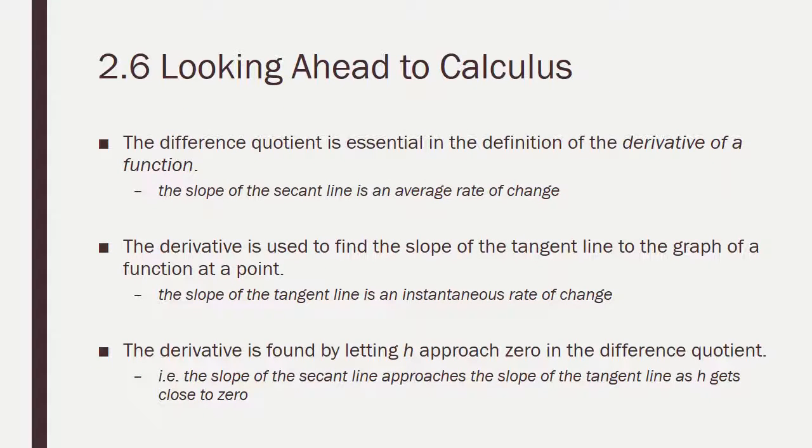The difference quotient is essential in the definition of the derivative of a function, which you will hear a lot about when you take calculus. The slope of the secant line is the average rate of change. We deal a lot with change in calculus. The derivative is used to find the slope of the tangent line to the graph of a function at a point, and the slope of the tangent line gives you an instantaneous rate of change. So the slope of the secant would give you your average speed from home to school in miles per hour. The slope of the tangent line would give you your exact speed at any given second in the trip. The derivative is found by letting h approach zero in the difference quotient. For example, the slope of the secant line approaches the slope of the tangent line as h gets close to zero. You will learn a lot about this in calculus.